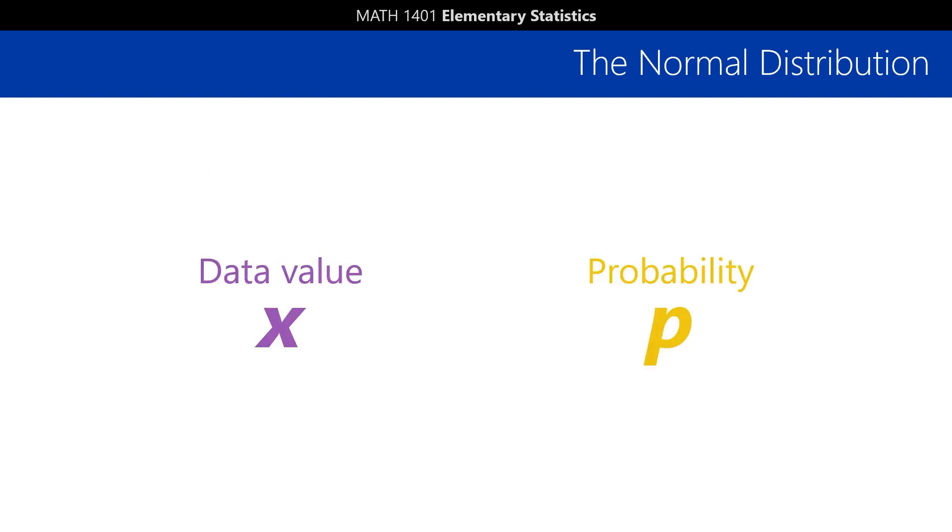It's all about inputs and outputs. With NORM.DIST, you know the data value ahead of time, and it tells you the cumulative probability.